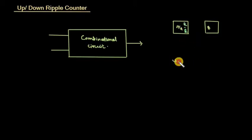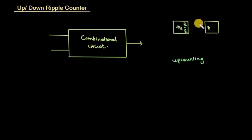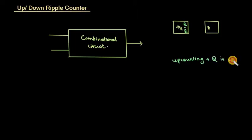For up counting, Q is used as the clock to the second flip-flop. Q is our clock input to the second flip-flop.